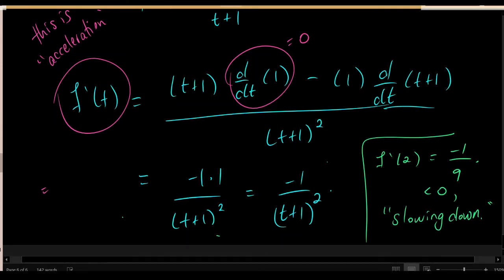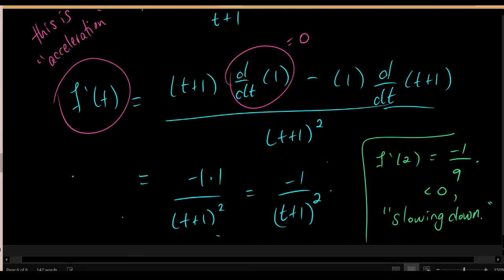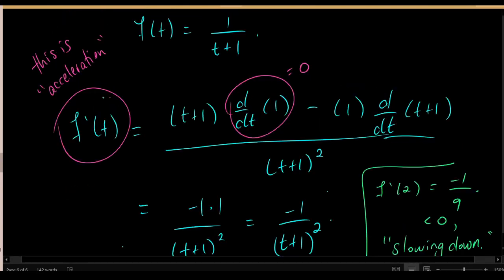That concludes today's material. We discussed the quotient rule, looked at examples of using it, and saw an instance of an incorrect use of the quotient rule. Then we practiced finding the value of a derivative using a table, and applied the quotient rule in the context of finding the derivative of the speed of an object — whose derivative is called its acceleration.